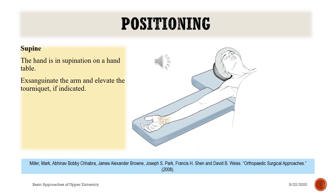Positioning: the patient lies in the supine position. The hand is in supination on a hand table. Exsanguinate the arm and elevate the tourniquet, if indicated.